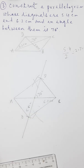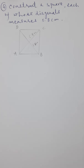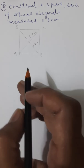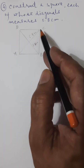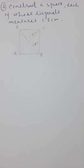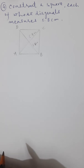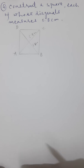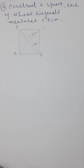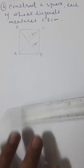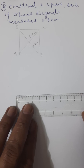This is your required parallelogram. Now in question number four, you need to construct a square each of whose diagonals measures 5.8 centimeters. This is a rough diagram of square ABCD. Each diagonal is 5.8 centimeters. The special characteristic of a square is that diagonals bisect each other at right angles.